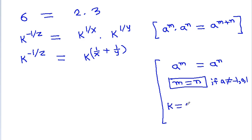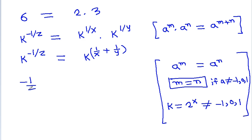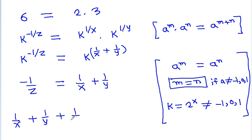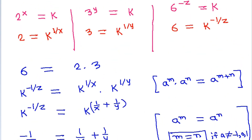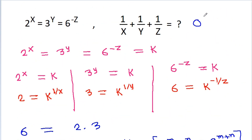We have k equal to 2 power x or 3 power y, which cannot be equal to minus 1, 0, or 1. So we can equate the exponents: minus 1 by z equals 1 by x plus 1 by y. Therefore, 1 by x plus 1 by y plus 1 by z will be equal to 0.